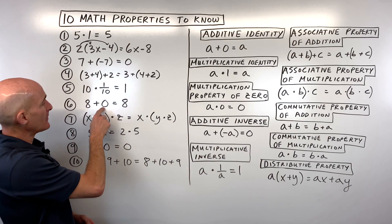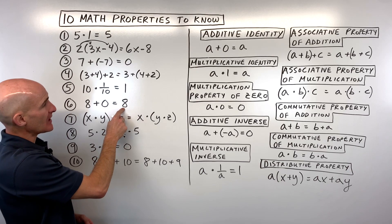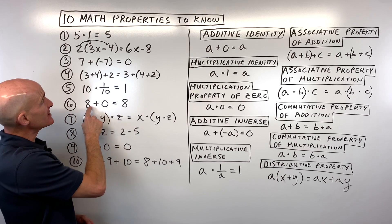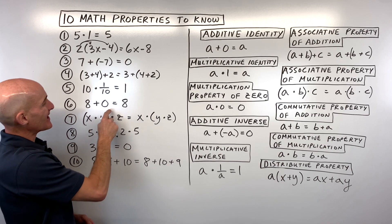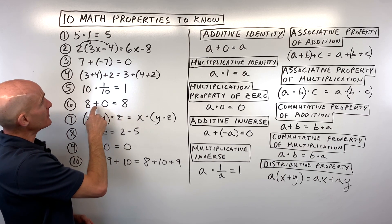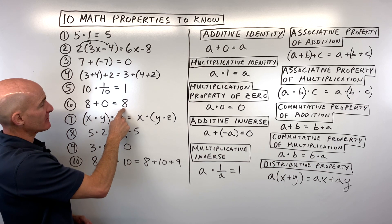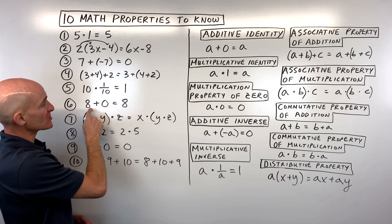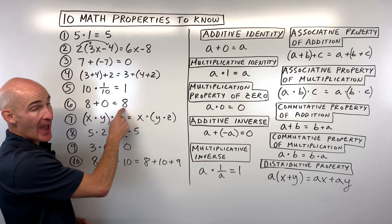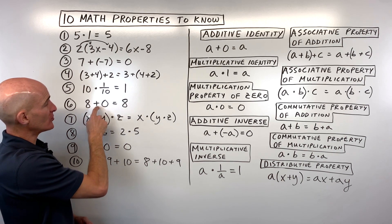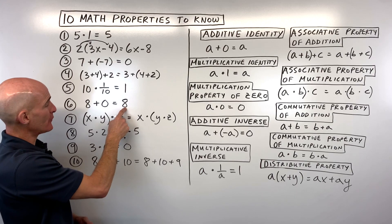Number six: eight plus zero equals eight. We're getting the identical quantity back, so this is called the additive identity. Whenever you add zero to a number, you get itself.